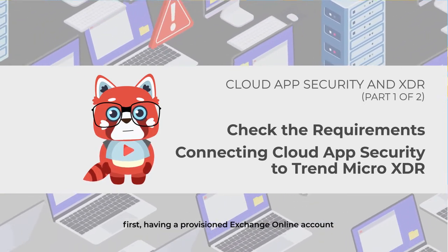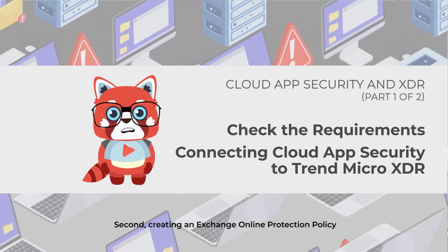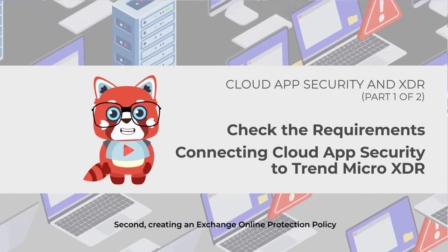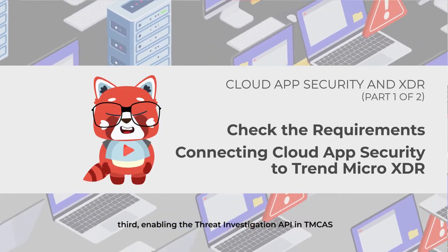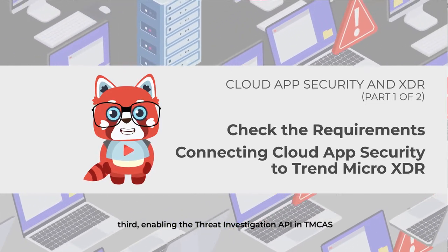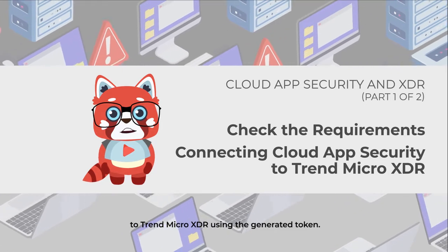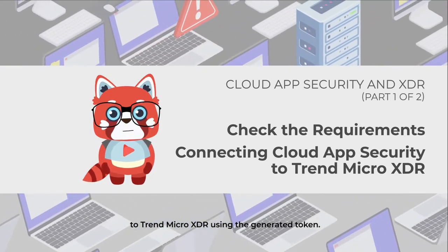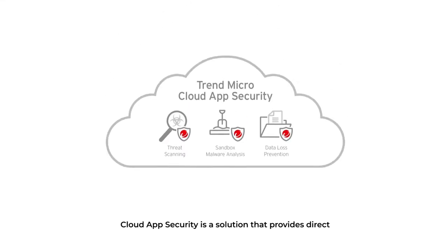The steps are: 1. Having a provisioned Exchange Online account. 2. Creating an Exchange Online Protection Policy. 3. Enabling the Threat Investigation API in TMCAS. 4. Connecting Cloud App Security to Trend Micro XDR using the generated token.